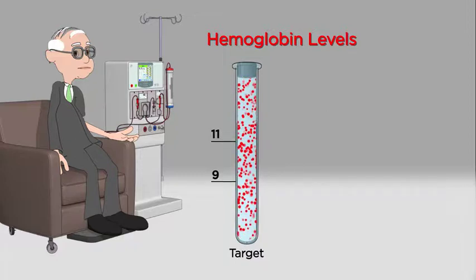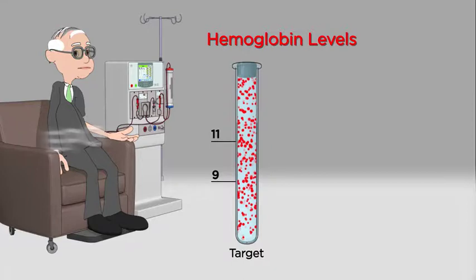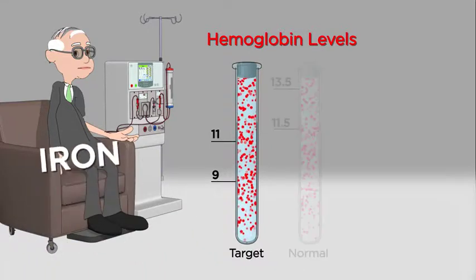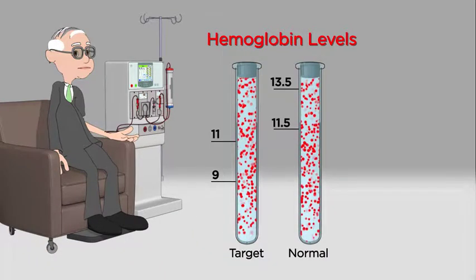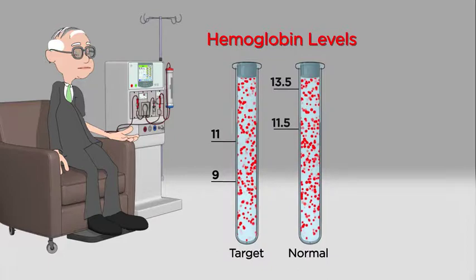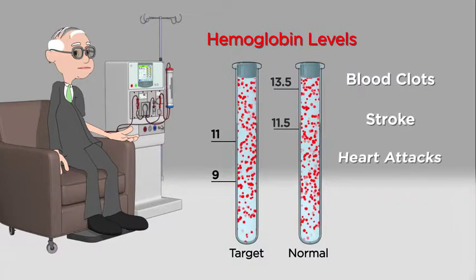Clinical studies have consistently shown that patients who receive increased doses of EPO and iron to truly normalize the body's hemoglobin levels may be at risk for developing complications, such as blood clots, stroke, and heart attacks.